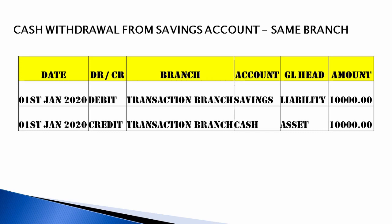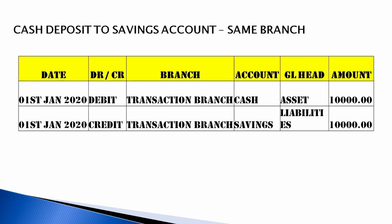When a customer is withdrawing, the cash balance will decrease. Assets always carry a debit balance, so when you credit, the balance is reduced. For cash deposit to savings bank account at the same branch, a cash deposit means you have to increase the cash balance — debit the asset. You also credit the savings bank account to increase the customer's balance. So general ledger entries: asset is debited and liability is credited.